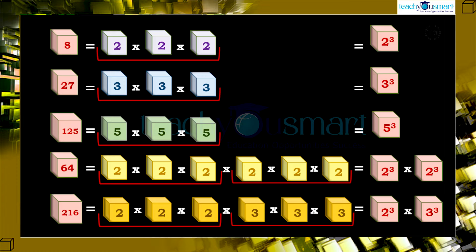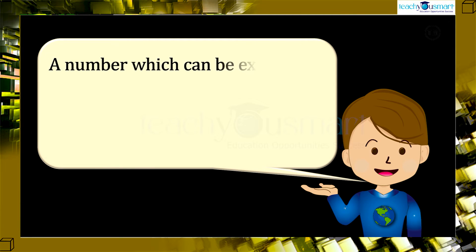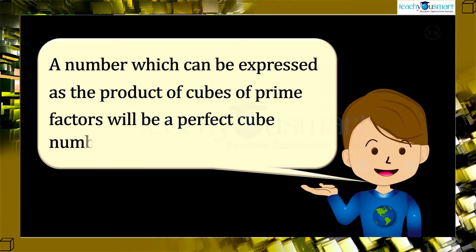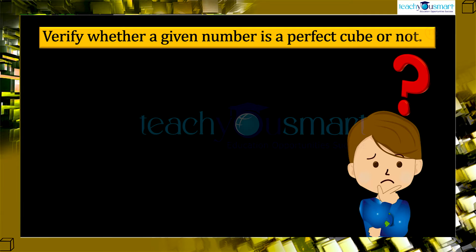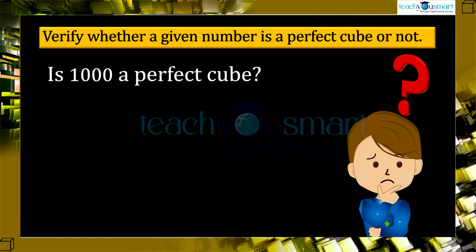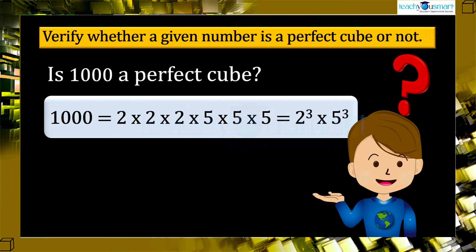We can express any cube number as the product of cubes of prime factors. In other words, a number that can be expressed as the product of cubes of prime factors will be a perfect cube number. Now let's verify whether 1000 is a perfect cube. 1000 = 2 × 2 × 2 × 5 × 5 × 5 = 2³ × 5³. The prime factors 2 and 5 each appear 3 times, so 1000 is a perfect cube.